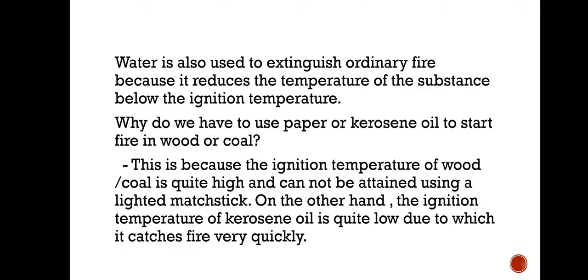Why do we have to use paper or kerosene oil to start fire in wood or coal? The answer is that whenever you burn wood or coal, you need to put paper or kerosene over it. This is because the ignition temperature of wood or coal is quite high and cannot be attained by using a lighted matchstick. On the other hand, the ignition temperature of kerosene oil is quite low. When we put kerosene oil over the wood or coal and apply fire with a lighted matchstick, it catches fire because kerosene has a lower ignition temperature, and then ultimately the wood or coal also catches fire.